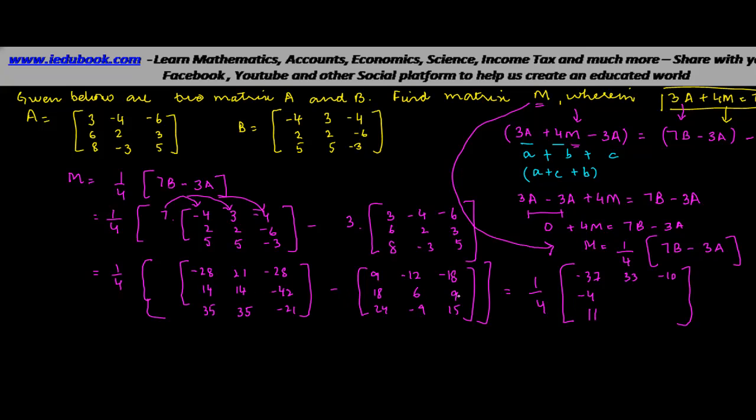14 minus 6, 8. 35 minus minus 9 will give you 44. Minus 42 minus 9 will give you minus 51. Minus 21 minus 15 will give you minus 36.